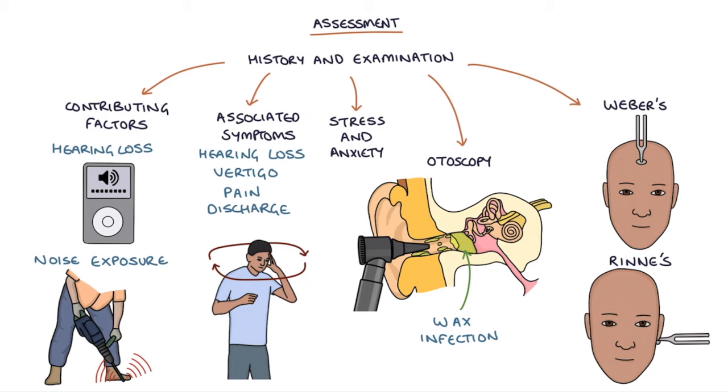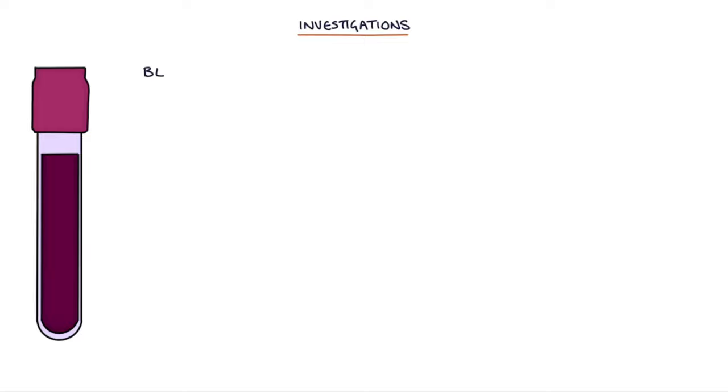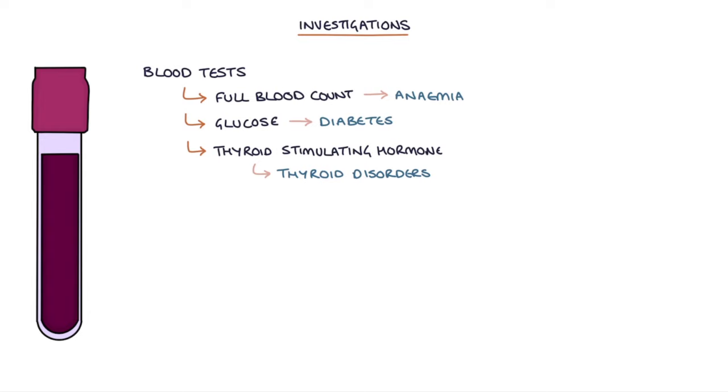Next let's talk about investigations. The NICE clinical knowledge summaries updated in March 2020 suggest considering blood tests for possible underlying causes, and this includes a full blood count to check for anemia, glucose levels to check for diabetes, thyroid stimulating hormone or TSH to test for thyroid disorders, and blood lipid levels to test for hyperlipidemia.